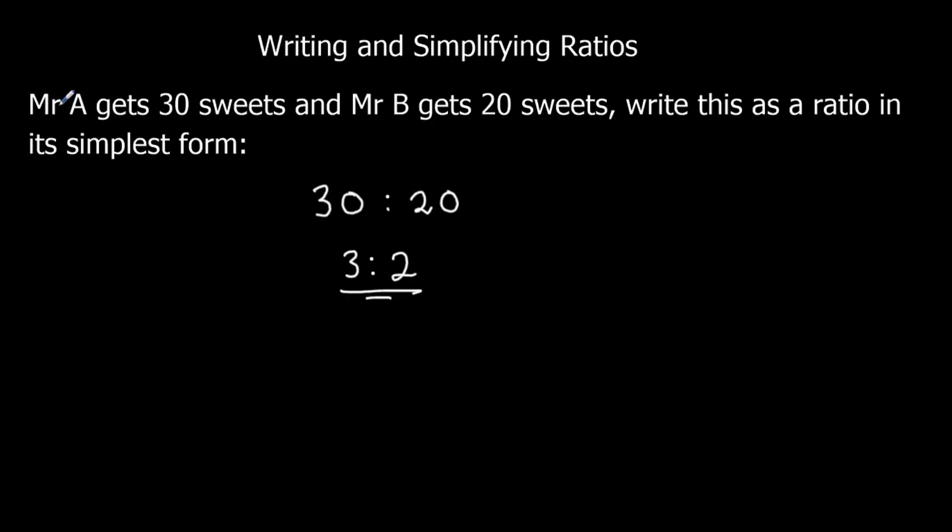The first one is the first one listed. So Mr A gets 3, Mr B gets 2. So for every 3 Mr A gets, Mr B gets 2.